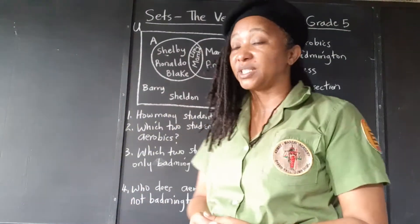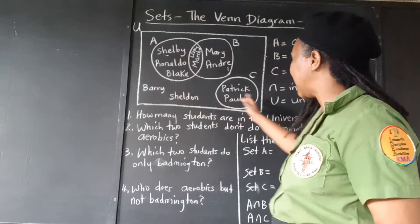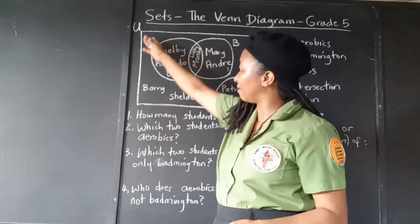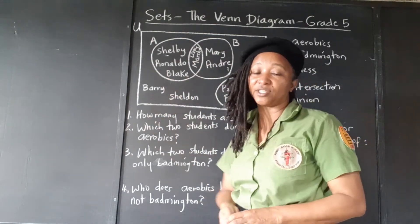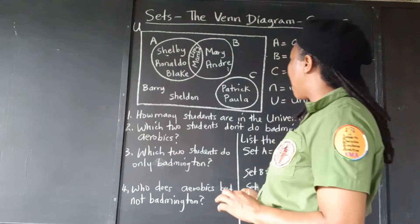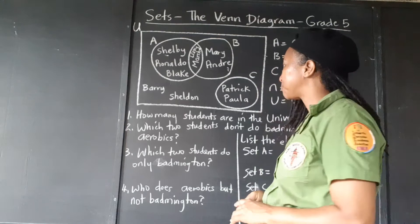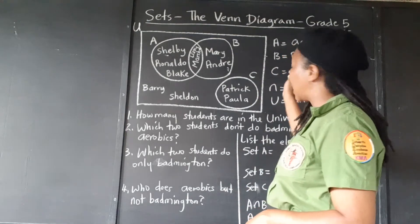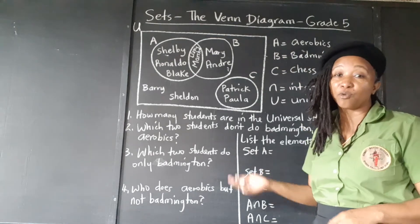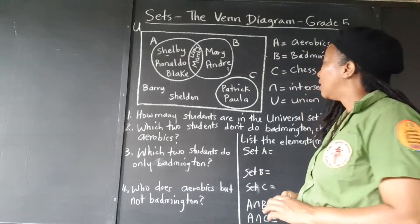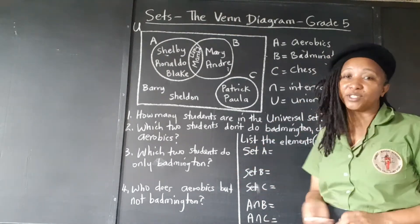We're also going to be answering some questions based on the Venn diagram. This diagram — the rectangle with circles inside the rectangle — is called a Venn diagram and it is used to represent sets and the different subsets. Looking at the key: set A is a set of students who do aerobics, set B students who do badminton, and set C students who do chess.